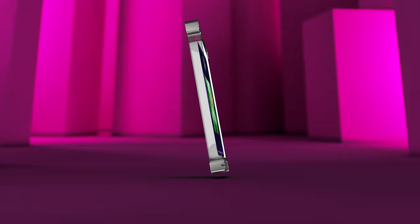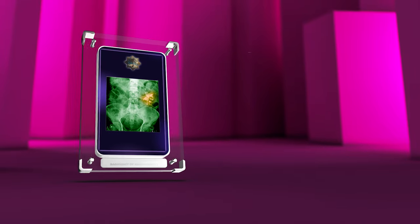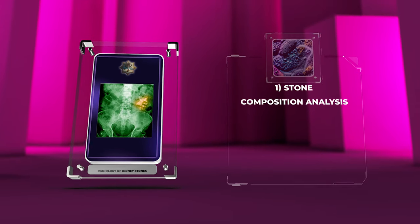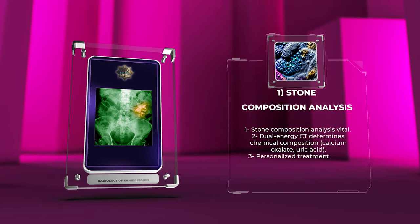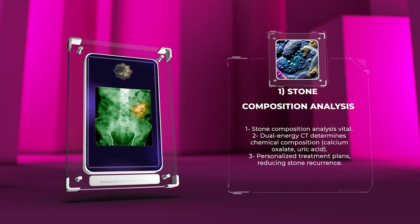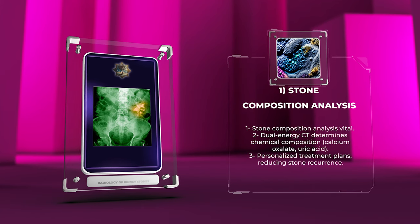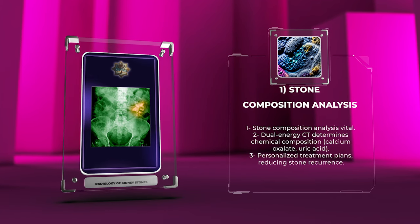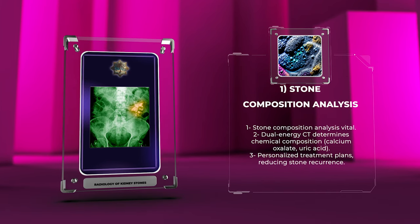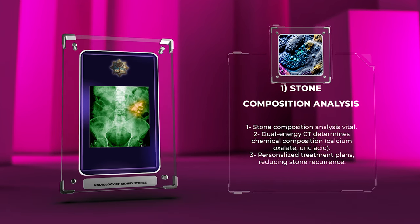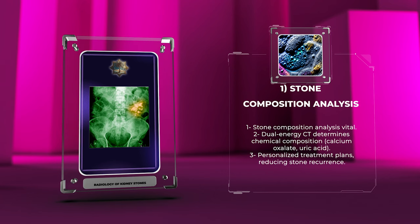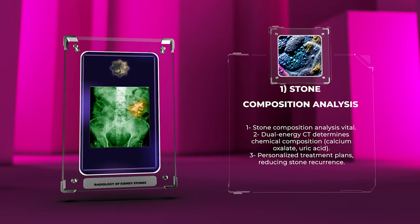Stone composition analysis is vital in treating kidney stones. By using dual energy CT, doctors can accurately determine the chemical composition of a stone, such as calcium oxalate or uric acid. This helps in creating personalized treatment plans and reducing the chance of stone recurrence.